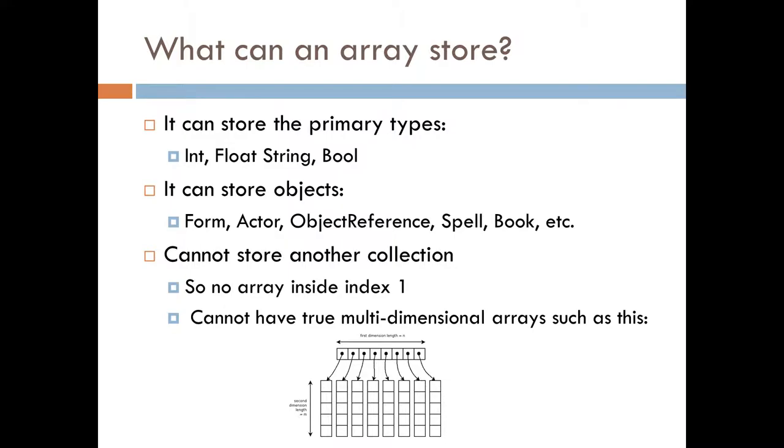The only thing an array cannot store is another collection. So you can't have an index 1, an array within that. It has to be a value that's either int, float, string, boolean, or an object.